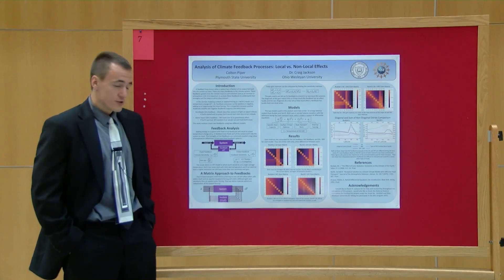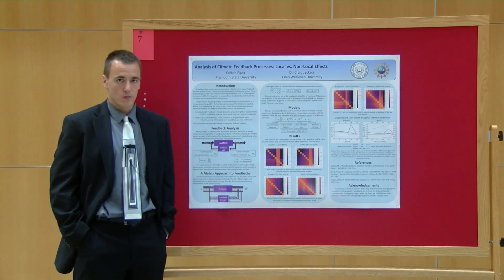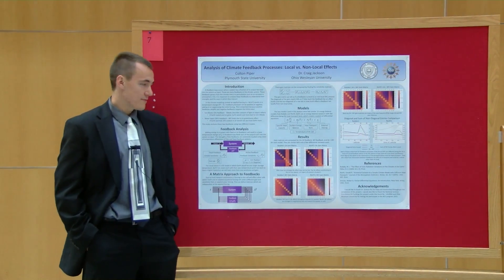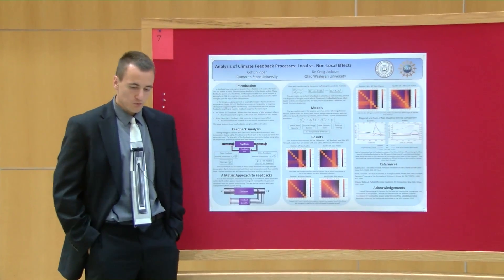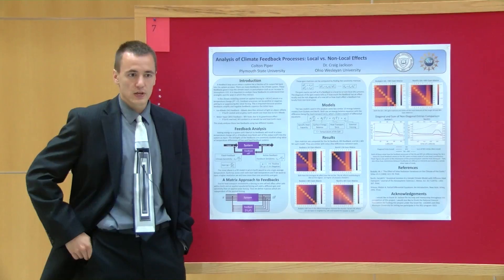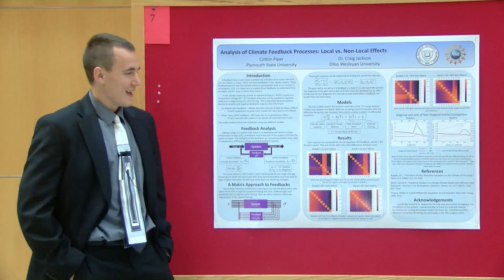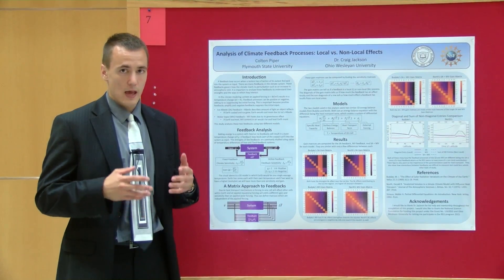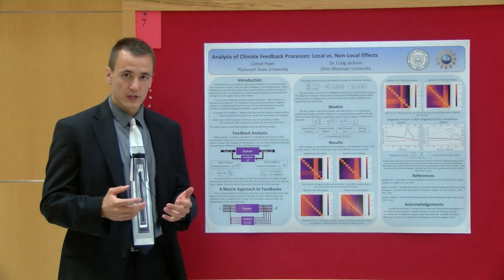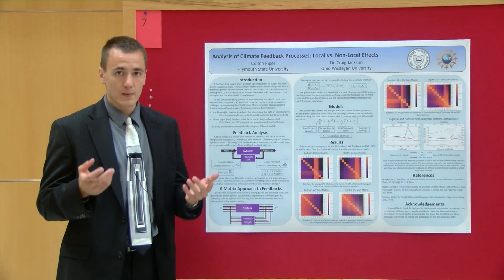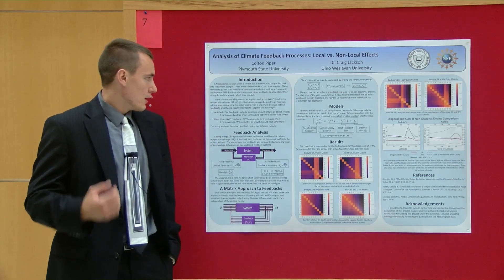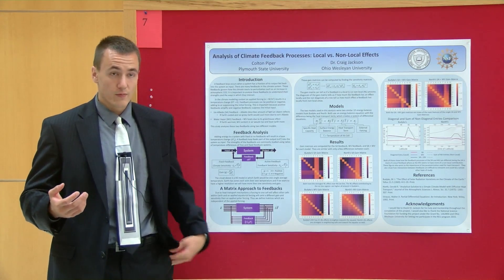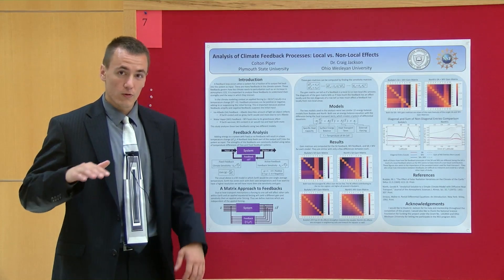To start out, a little introduction. A feedback loop is any system in which a fraction of the output gets put back into the system as input. There are many feedbacks in the climate system which govern how our climate is and how it is structured. Feedback processes can either be positive or negative, in which they amplify the addition of heat or they suppress it.